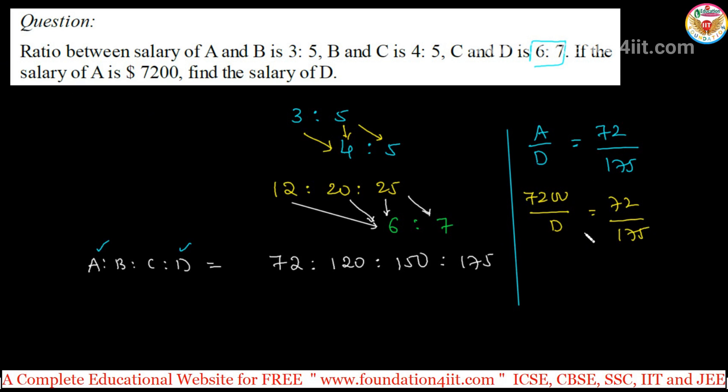We can canceling or do cross multiplication, so D equals 7,200 into 175 by 72. Just simplify, that is the salary of D. 72 times 100, 175, 17,500.